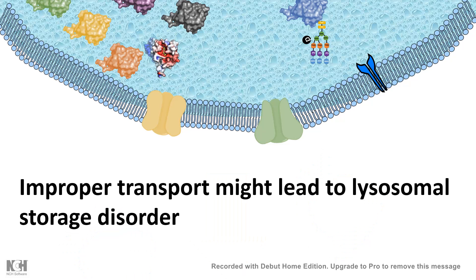This sorting process is very important because if the transport or the tagging process is improper, lysosomal storage disorder could occur, where specific unwanted protein products accumulate in the lysosome but cannot be degraded because the hydrolytic enzymes are not properly reaching the lysosome. That is why proper sorting of proteins in the trans-Golgi network and delivering them to their destined location is very important for the cell.